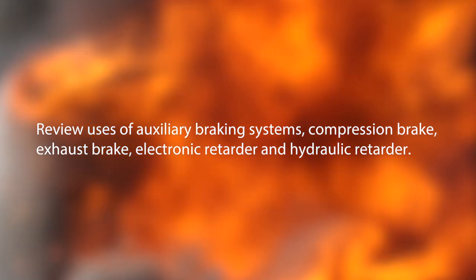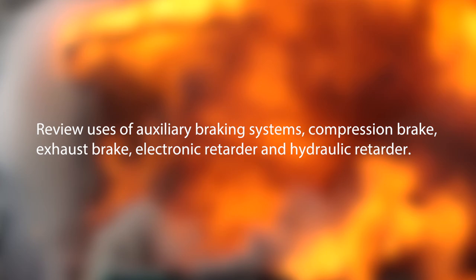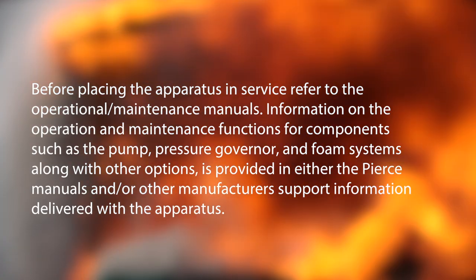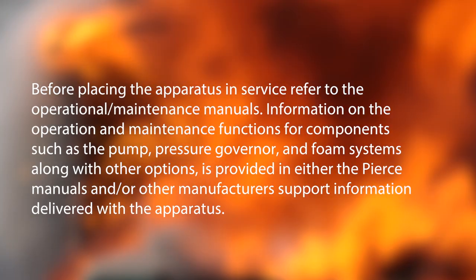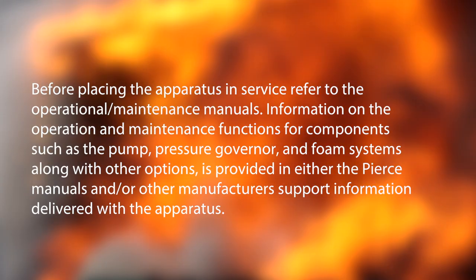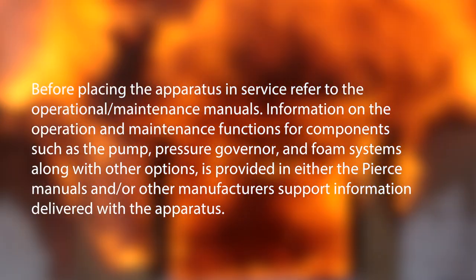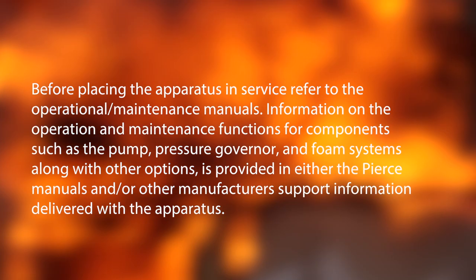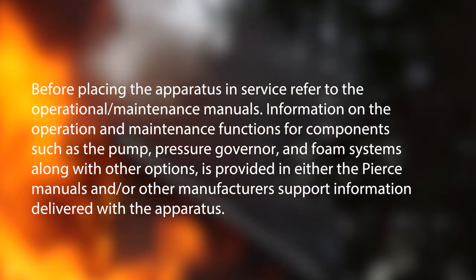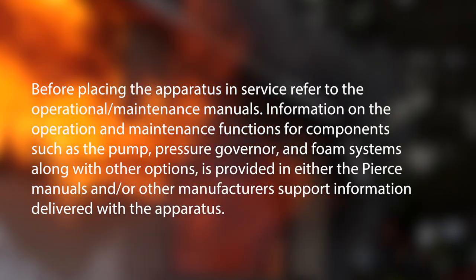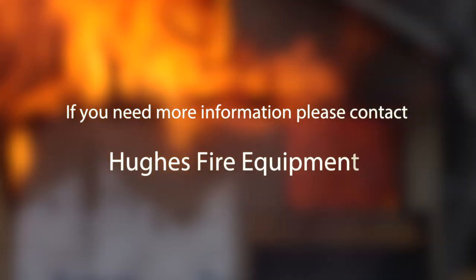Review the use of auxiliary braking systems: compression brake, exhaust brake, electronic retarder, and hydraulic retarder. Before placing the apparatus in service, refer to the operational maintenance manuals. Information on the operation and maintenance functions for components such as the pump, pressure governor, and foam systems, along with other options, is provided in either the Pierce manuals or other manufacturer support information delivered with the apparatus. If you need more information, please contact Hughes Fire Equipment.